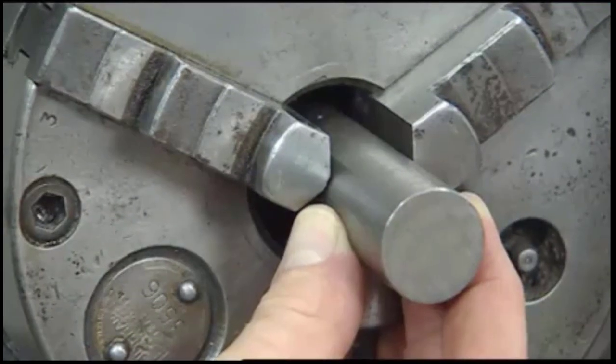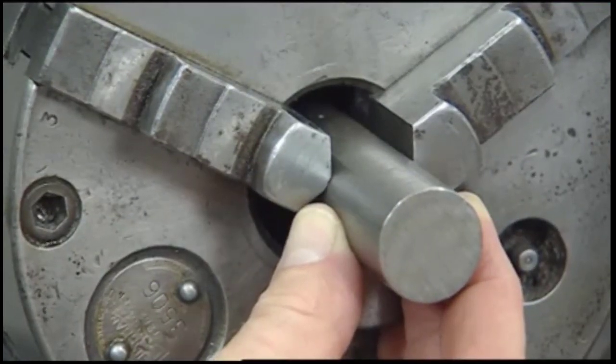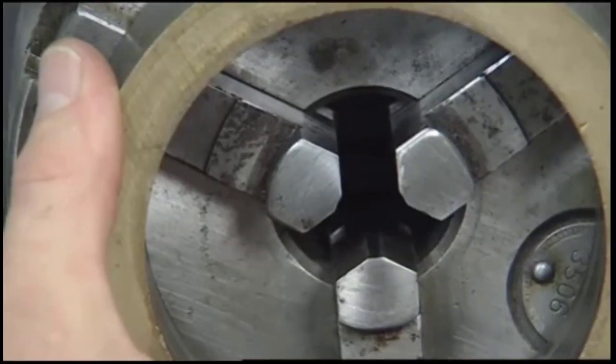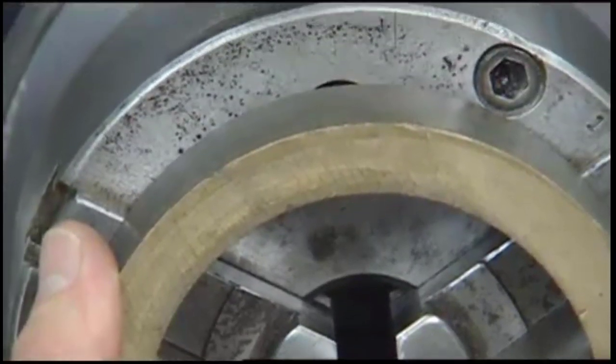Round work can be clamped on its outside diameter by closing the jaws against the work. To grip the inside diameter of a workpiece, move the jaws outward.